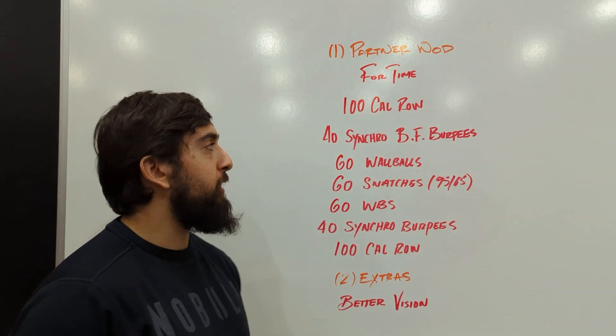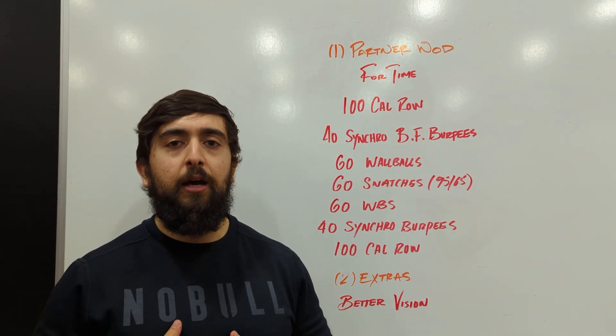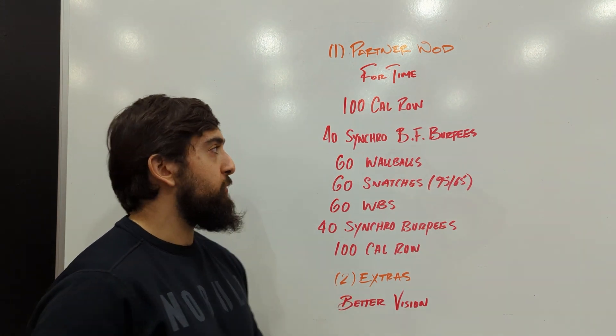Then 40 synchro bar facing burpees, so you need to meet at the bottom at the same time, the bottom of the burpee, and then jump over the bar at the same time as well.